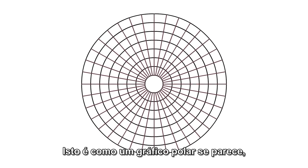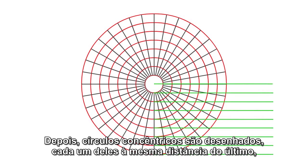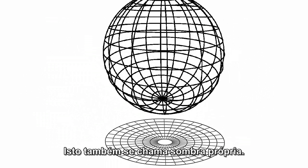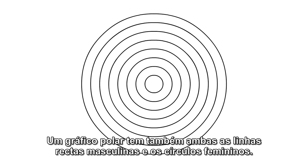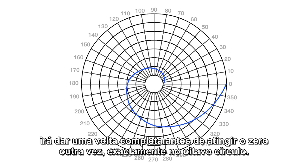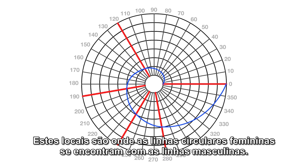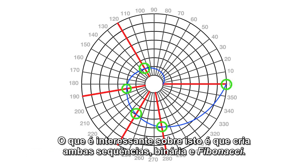This is how a polar graph usually looks, with 36 radial lines in 10-degree increments representing the 360 degrees. Concentric circles are drawn, each with the same distance as the last, creating eight equal demarcations. It's a two-dimensional drawing of a three-dimensional sphere projected onto a flat surface — also called a shadow form. A polar graph has both straight male lines and circular female lines, both male and female energies interacting at once. If you plot a golden mean spiral at zero degrees on the polar graph, it will loop all the way around before hitting zero again, exactly at the eighth circle, crossing five specific places at 120, 190, 240, 280, and 360 degrees. Interestingly, this creates both a binary and Fibonacci sequence.